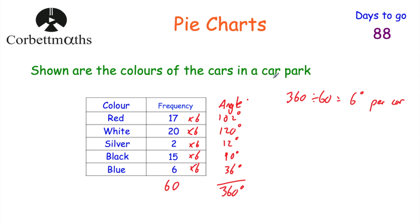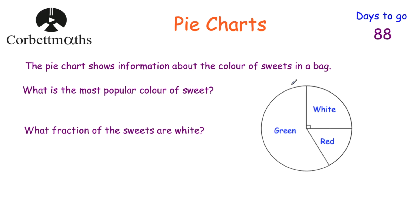Feel free to draw that pie chart for extra practice. Remember the practice questions are available where circles are drawn for you — just use your protractor. Now we're going to look at reading pie charts. Here we've got a pie chart showing information about the color of sweets in a bag, and we've got two questions to answer.